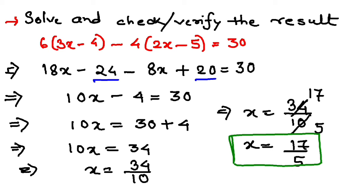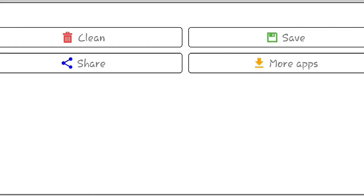Now we shall verify this one. Listen carefully. We will put x equal to 17 by 5 in the left hand side and we should get the right hand side. If we put x equal to 17 by 5 in the left hand side and simplify, I should get 30. Ultimately you have to prove that left hand side equals right hand side.